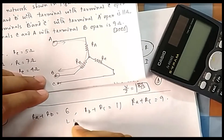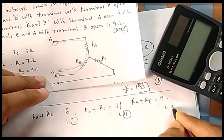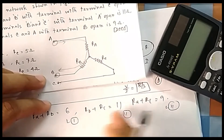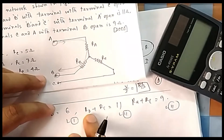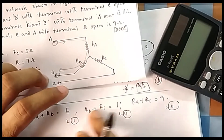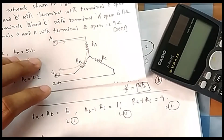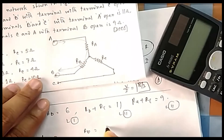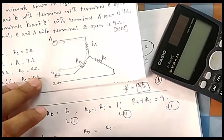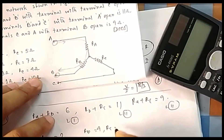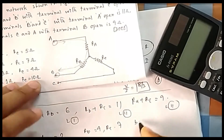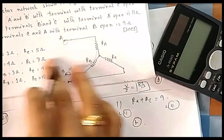With three unknowns and three equations you can easily solve it. Find Rb: from Ra + Rb = 6, substitute into the other equations. After solving, you get Ra = 2, Rb = 4, and Rc = 7.